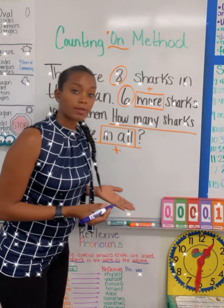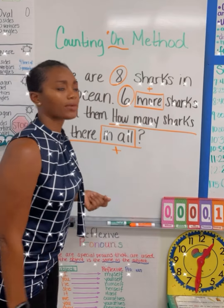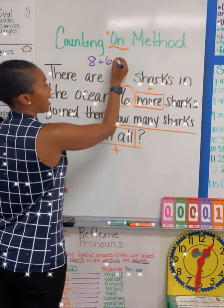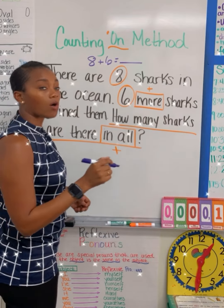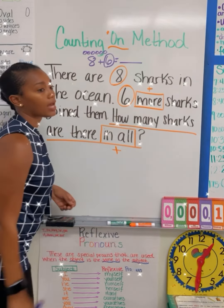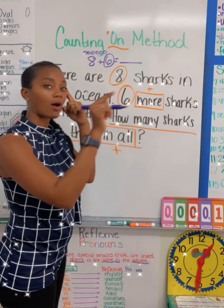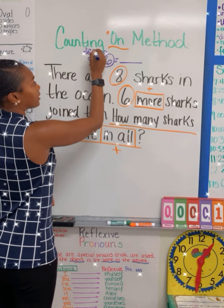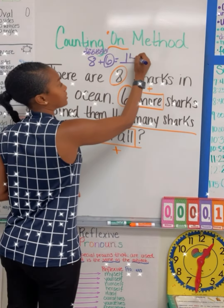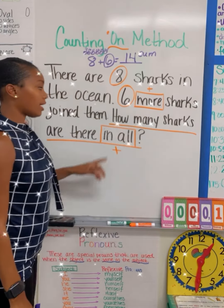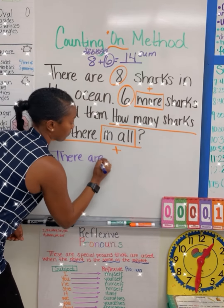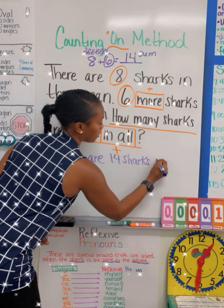Now it's time to use our count on method to solve our problem. When I have the count on method, I'm going to start with the larger number of 8. So I am adding 8 plus 6 to find my sum. I'm going to circle the smaller number, and I'm going to say 1, 2, 3, 4, 5, 6. I'm going to then start with 8 in my mind and count forward: 9, 10, 11, 12, 13, 14. Therefore, 8 plus 6 is equal to a sum of 14. How many sharks are there in all? There are 14 sharks in all.